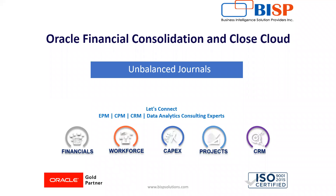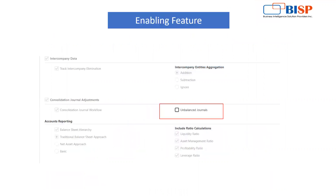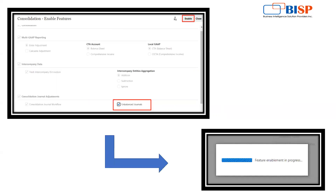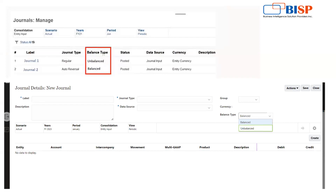Hello everyone, welcome to BSP Solutions. In today's video we are going to discuss a new feature called Unbalanced Journal from Oracle Financial Consolidation and Close Cloud application. Oracle has released this new feature recently. You can enable it by going to Configuration, then Enable Features, ticking Unbalanced Journal, and saving the settings. When you enable it, you will get a confirmation pop-up on your screen.